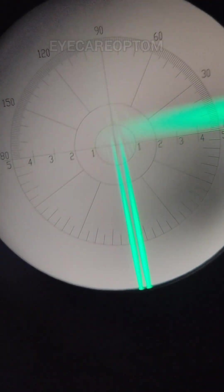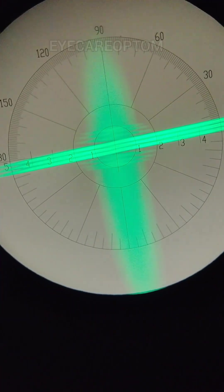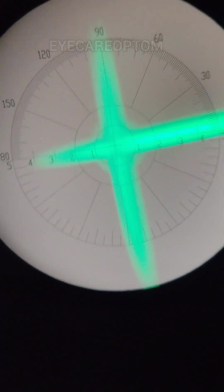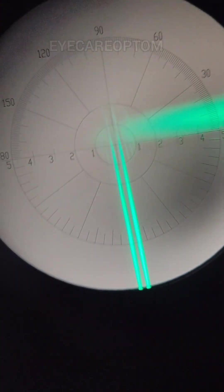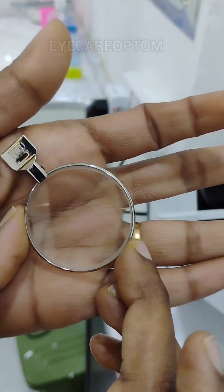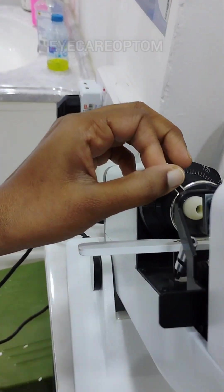When we adjust the power drum, another axis is getting clear. At the same time, the perpendicular axis is getting blurred. This happens in cylindrical lenses. I'm keeping it at 180 axis.